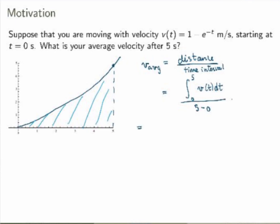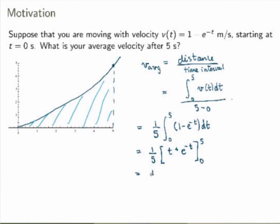Now I can plug in the velocity function and calculate. I get 1 over 5 times the integral from 0 to 5 of (1 minus e to the minus t) dt. Integrating, the integral of 1 is t, and the integral of minus e to the minus t is plus e to the minus t, evaluated between 0 and 5. Plugging in the numbers, I get 5 plus e to the minus 5 minus 0 minus 1, which gives me 1 over 5 times (4 plus e to the minus 5).